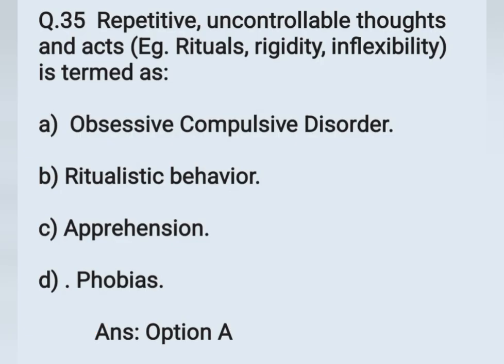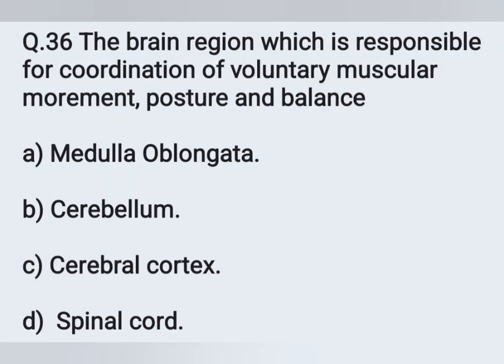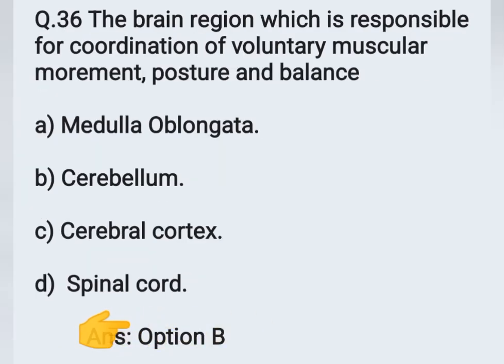Question number 36. The brain region responsible for coordination of voluntary muscular movement, posture, and balance — Option A: Medulla oblongata. Option B: Cerebellum. Option C: Cerebral cortex. Option D: Spinal cord. The correct answer is cerebellum — Option B.